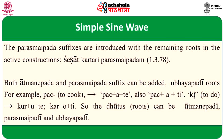The Parasmeipada suffixes are introduced with the remaining roots in active constructions. Sutra Shesha Kartari Parasmeipadam 1.3.78 states that after the remaining verbal roots, when the agent is to be denoted, Parasmeipada suffixes are used. Such verbal roots are listed in the Dhatupatha either with the Udatta accent as an indicator or by the absence of the marker Gaon or Yon. Where particular rules have not been formulated, Parasmeipada suffixes are introduced. There are Ubhayapadi roots to which both Atmanipada and Parasmeipada suffixes can be added — for example, Pach (to cook): Pachate and also Pachati; Kri: Kurote and also Karoti. So the Dhatus can be Atmanipadi, Parasmeipadi, and Ubhayapadi.